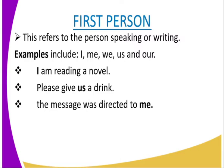'We,' 'us,' and 'our' are in plural form. Examples: 'I am reading a novel' — 'I' is first person singular. 'Please give us a drink' — 'us' is first person plural. Both refer to the person speaking, so they are in first person form. 'The message is directed to me' — 'me' is first person singular.